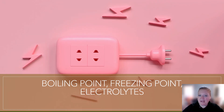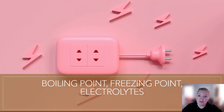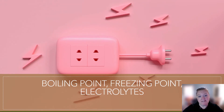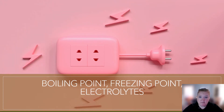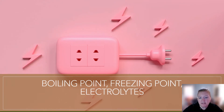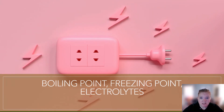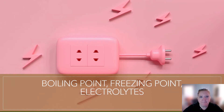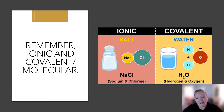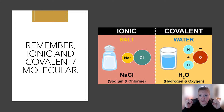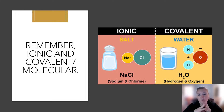We're going to talk about boiling point, freezing point, and electrolytes. The changes of boiling point and freezing point are sometimes called colligative properties because they depend on how much stuff is in the solution. Remember, we have ionic and we have covalent — covalent and molecular mean the same thing. Ionic substances dissociate into ions; covalent substances do not. Polar covalent substances have charges and non-polar do not.